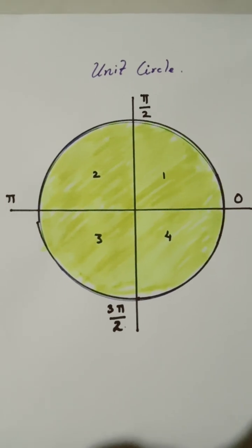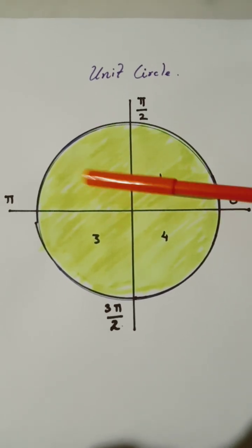Here's a quick trick to find the radians of the unit circle. So we have four quadrants here: 1, 2, 3, 4.